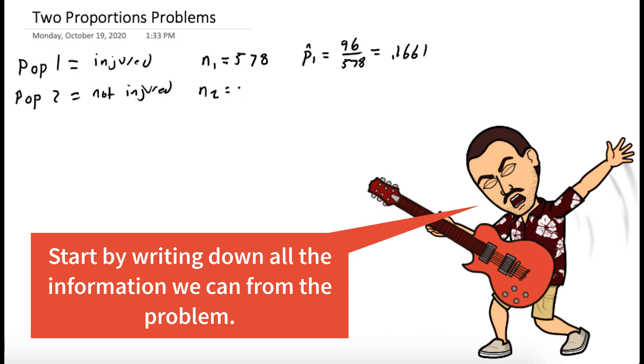And N2, again from the question, is 2,992. P2 hat is the number of helmet wearers, which is 656 divided by the number of people that were not injured, 2,992, which works out to be 0.2193.